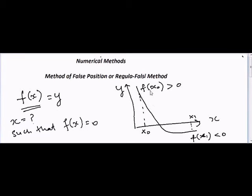But here, instead of just averaging x₀ and x₁, we are drawing a line between f of x₀ and f of x₁. So if we draw this line, then we will look at the intercept on the x-axis and then we will use this as our first approximation.